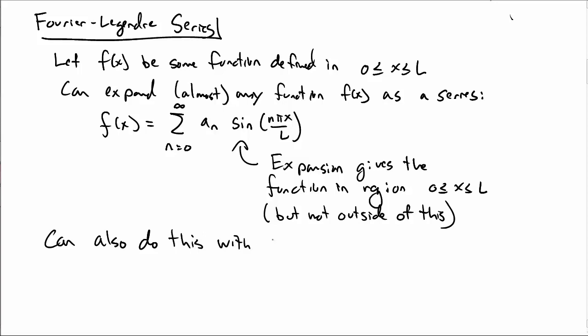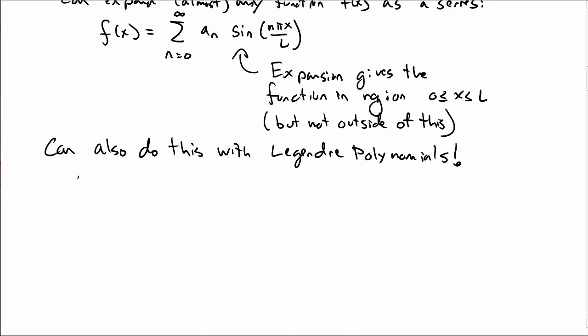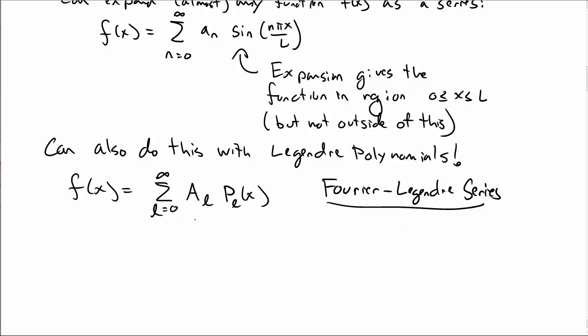But we can also do this, it turns out, with Legendre polynomials. And so what we're going to do is we're going to write our function f of x in the same way we're going to write it as a sum over Legendre polynomials. So we do a sum from n equal to 0 to infinity, some coefficients, call it sum over l, p sub l of x, where the p sub l are the Legendre polynomials. And this is called the Fourier-Legendre series. Naturally, it's not just a Fourier series because it involves Legendre polynomials.